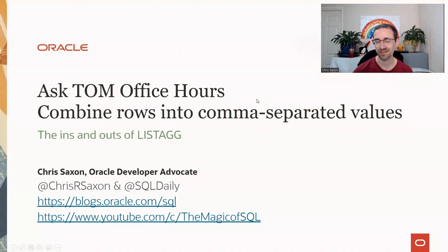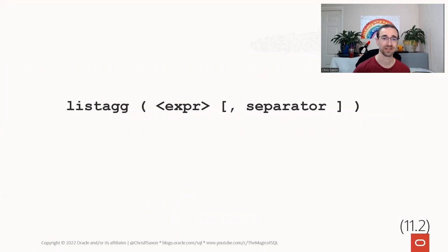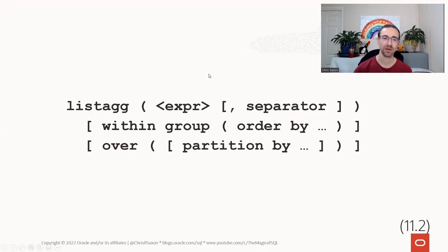Hi everyone, I'm Chris Saxon. I'm part of Gerald Venzel's developer advocate team, here to help you get the best out of Oracle SQL and PL/SQL. Today we'll be looking at LISTAGG. Starting off with the basic syntax: the minimum you need is the LISTAGG function itself and the expression — the column you are aggregating and combining into rows — and there is an optional separator. By default, this is an aggregate, so you'll combine many rows down into a few.